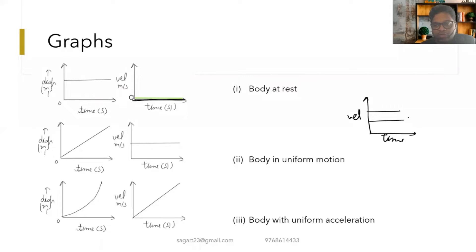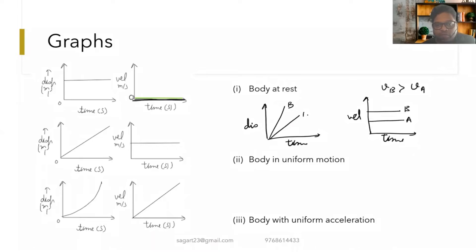On a velocity-time graph, if we have two bodies A and B, the velocity of B is greater than the velocity of A. Similarly, on the displacement-time graph, B took less time and A took more time because A was traveling slower. This is the displacement-time graph for a body having uniform motion.